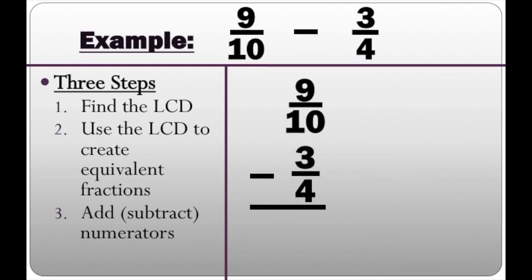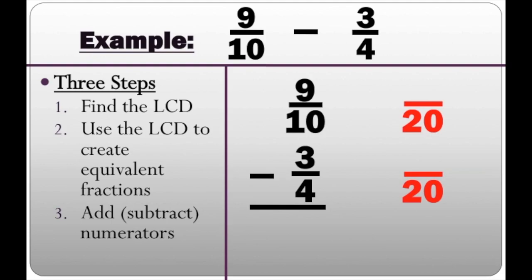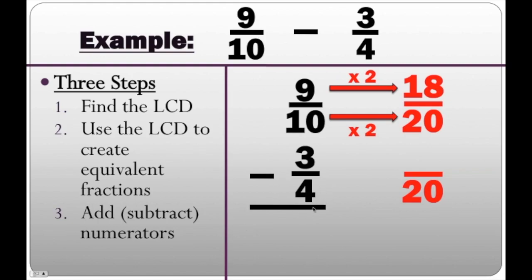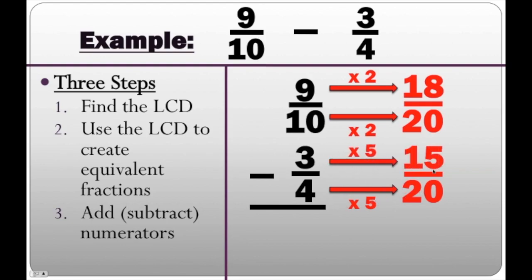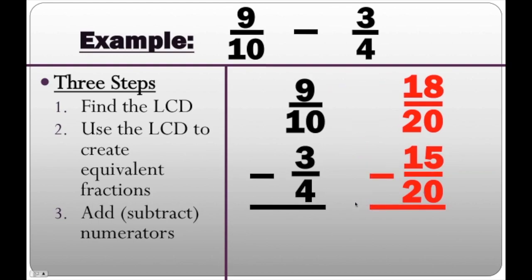Here we have 9/10 minus 3/4. Same exact process: find the LCD of 10 and 4, which is 20. How do I go from 10 to 20? Multiply by 2, and 9 times 2 is 18, giving 18/20. How do I go from 4 to 20? Multiply by 5, and 3 times 5 is 15, giving 15/20. Now subtract: 18/20 minus 15/20 is 3/20.